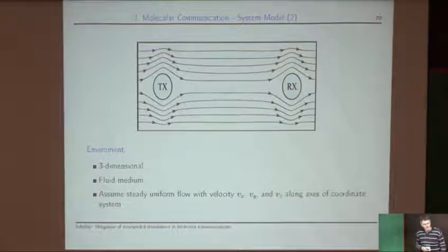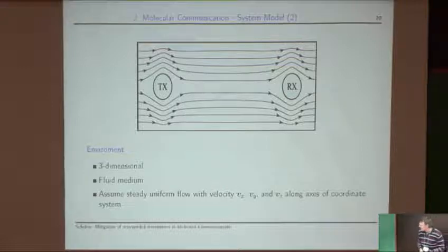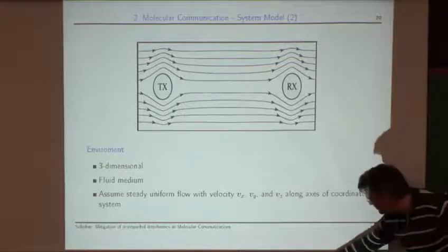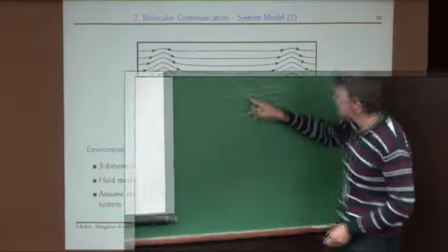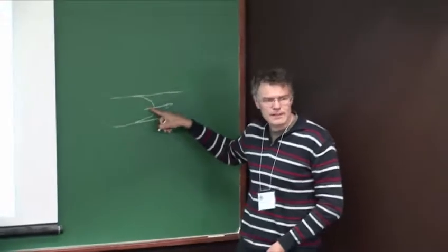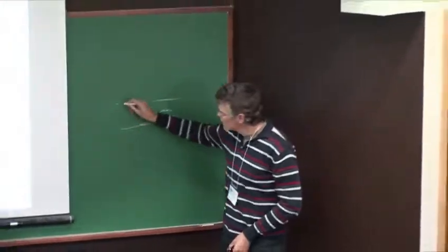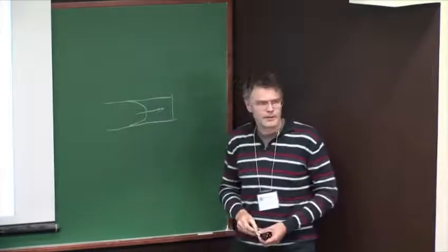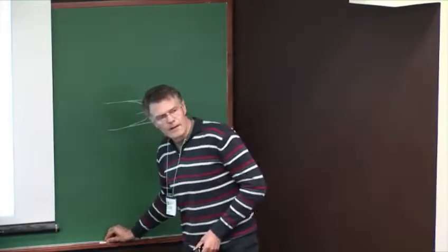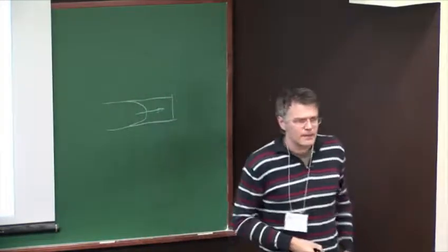Question: How is uniform flow different from laminar? In laminar flow, for example in a pipe, the velocity distribution varies — zero at the walls and higher in the center. Uniform flow means the velocity is the same everywhere.